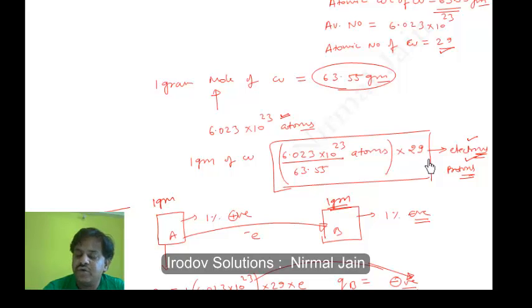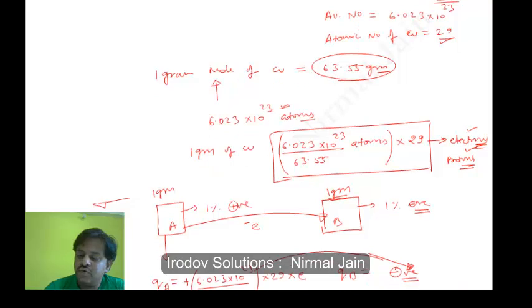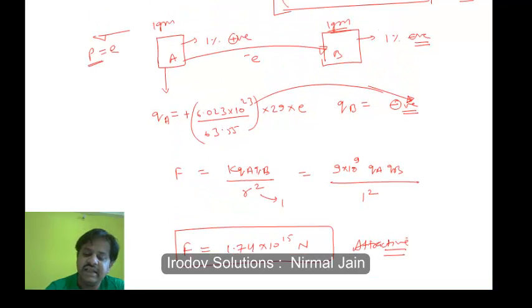This many number of atoms will have this much of electrons, and as each electron is having charge e, which is 1.6 into 10 to the power minus 19, so overall this is the total charge, total positive or total negative charge available on sample A in terms of electrons or in terms of protons.